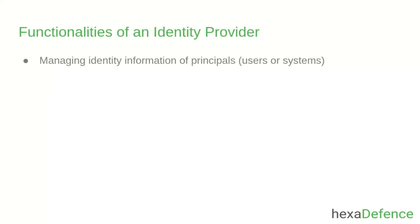We can clarify this statement by understanding the functionalities of an identity provider. An identity provider manages the identity information of principles. A principle can be a user or a system which can be authenticated by the identity provider. Identity information contains details such as username, password, emails and so on. These information are used for authentication and authorization purposes.